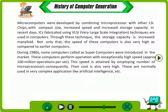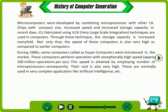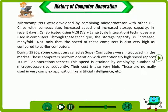During the 1980s, computers called supercomputers were introduced. These computers perform operations with exceptionally high speed — approximately 100 million operations per second. This speed is attained by employing a number of microprocessors concurrently. Their cost is also very high. These are normally used in very complex applications like artificial intelligence.